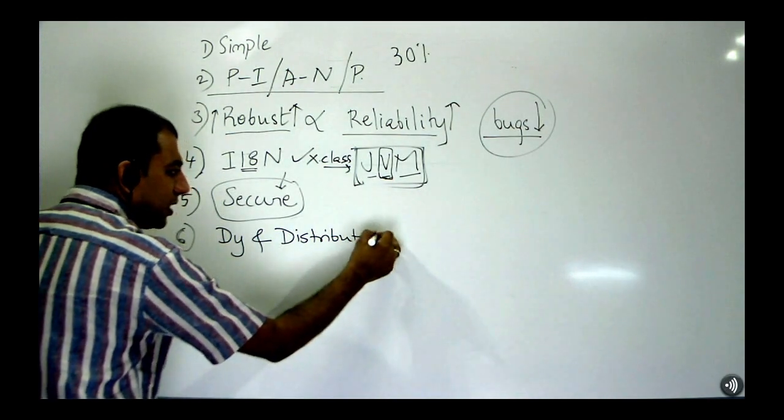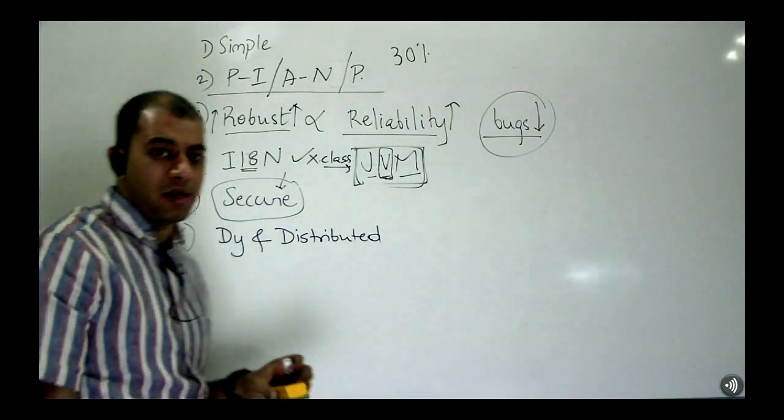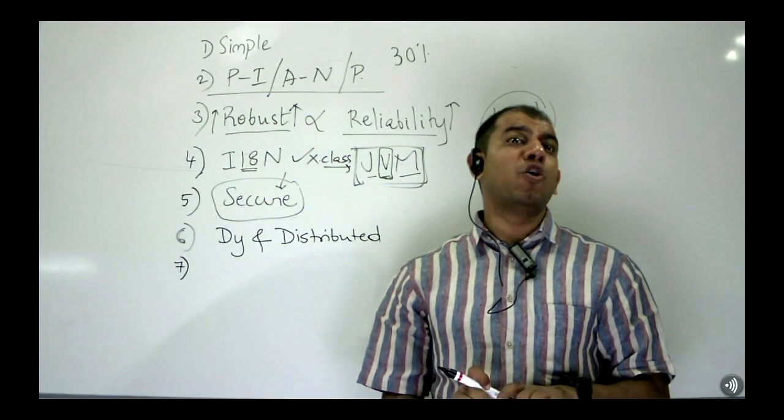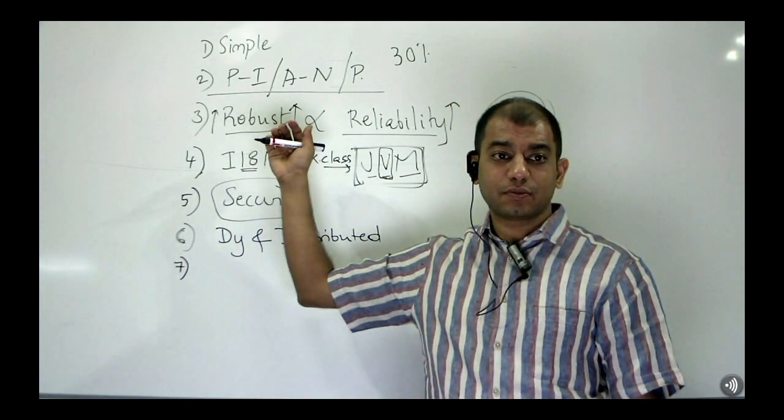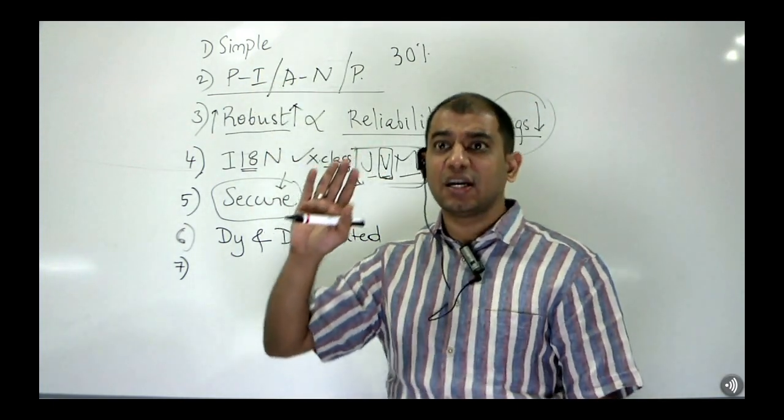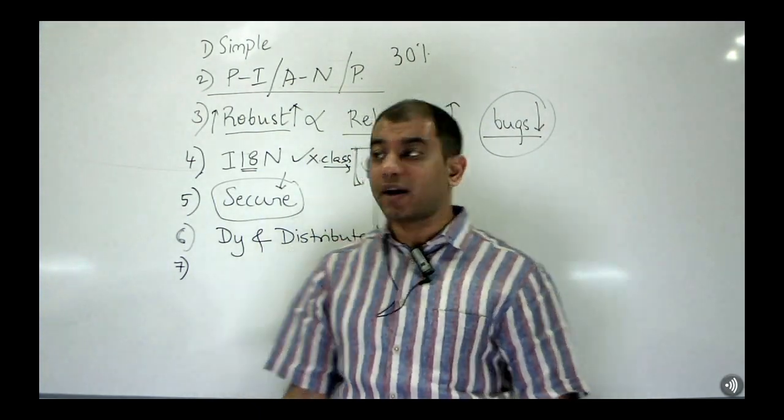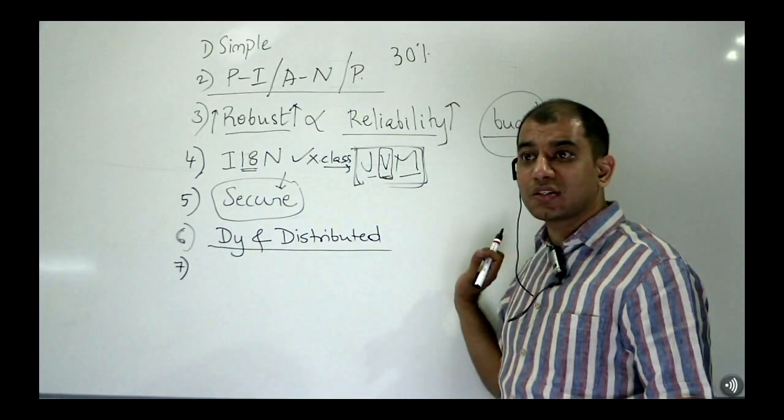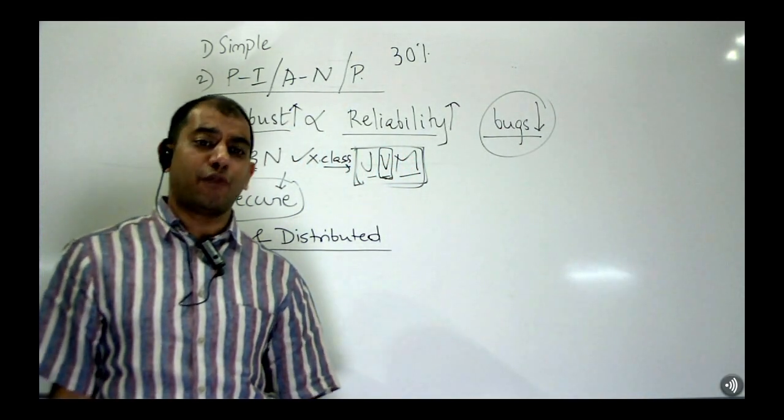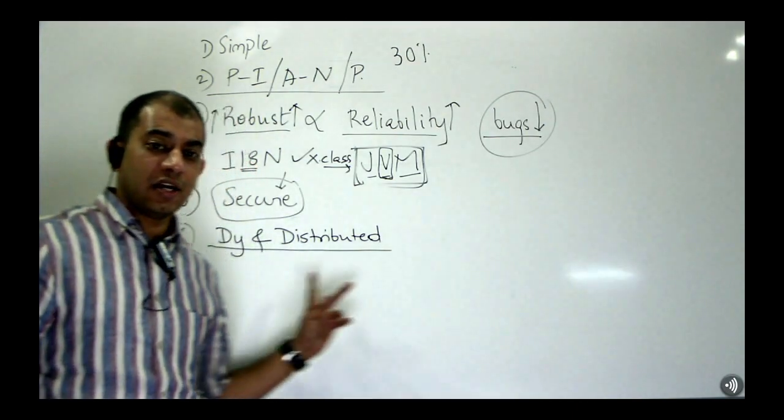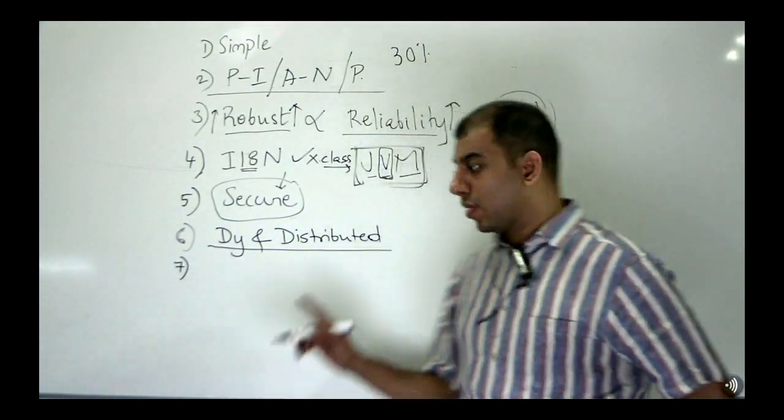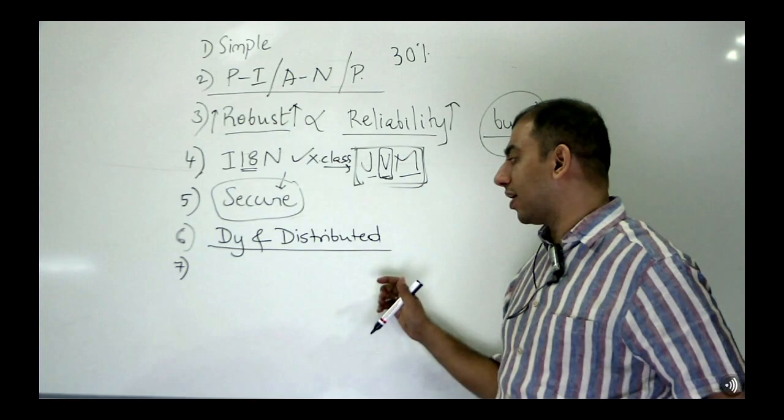Java is said to be dynamic and distributed. I will just tell you two words about this because it is very difficult to explain this particular point unless you see some code. By the way, what is considered the most popular advantage of Java is? Popular advantage. Platform independence. Platform independence. However, the most powerful feature of Java is this. Java being dynamic and distributed. In fact, the reason why Java exists today in the forms that we have seen across all the four domains is because Java is dynamic and distributed.